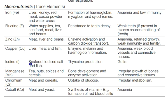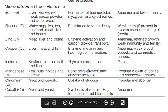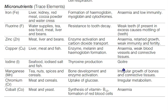Iodine is found in seafood, iodized salt, and fish. It is very important for thyroid hormone (thyroxine) production. Deficiency causes goiter.